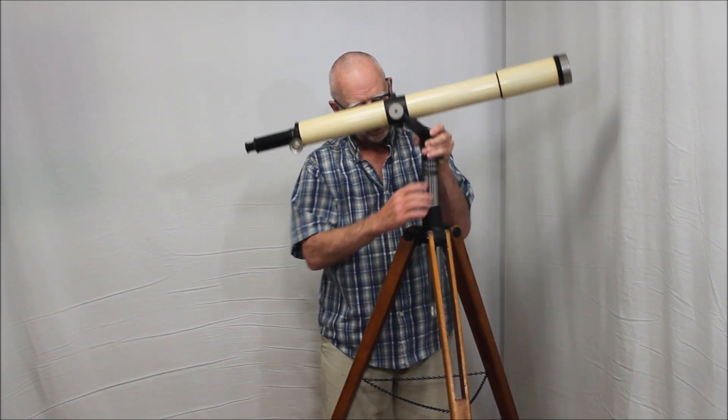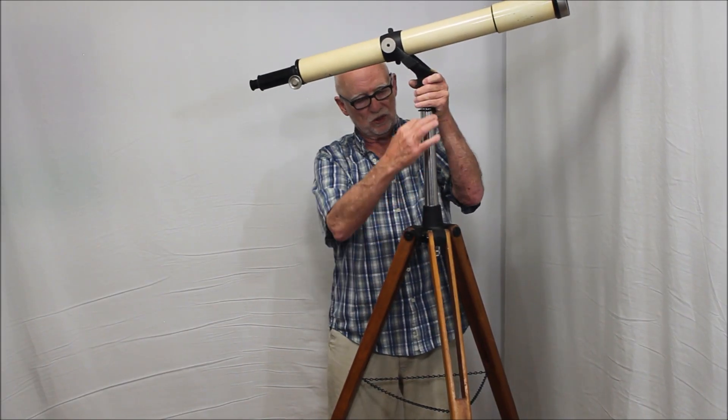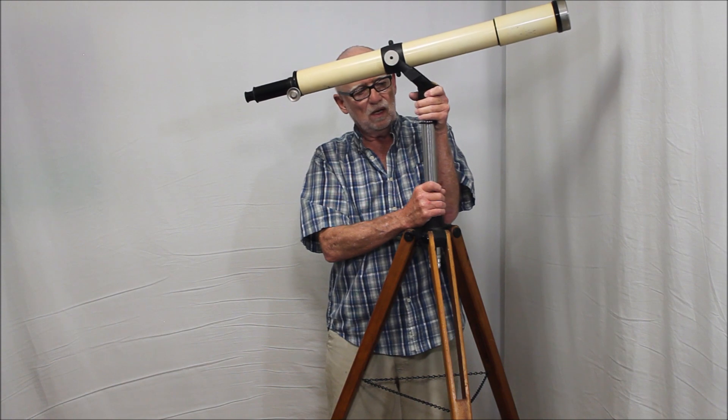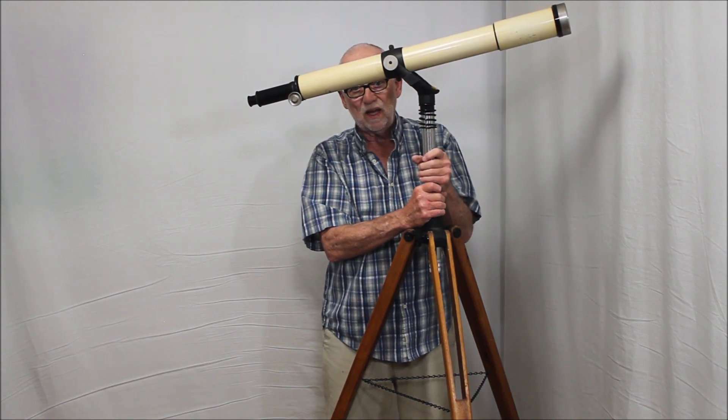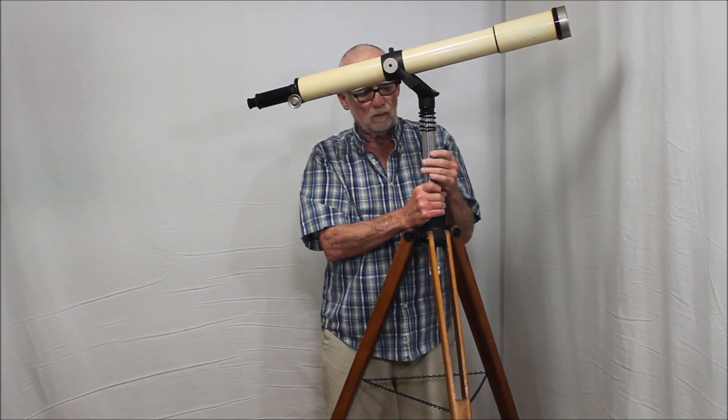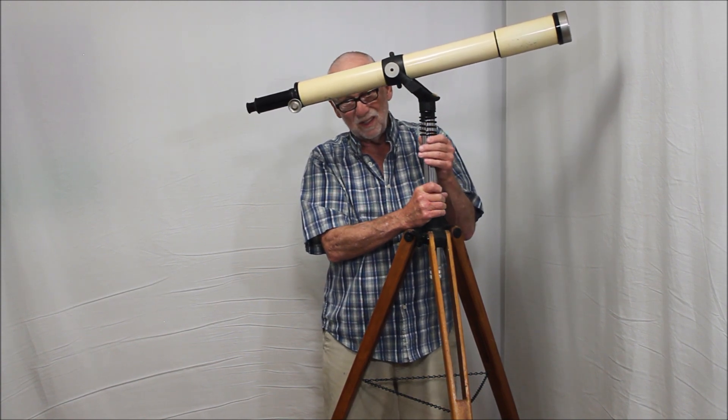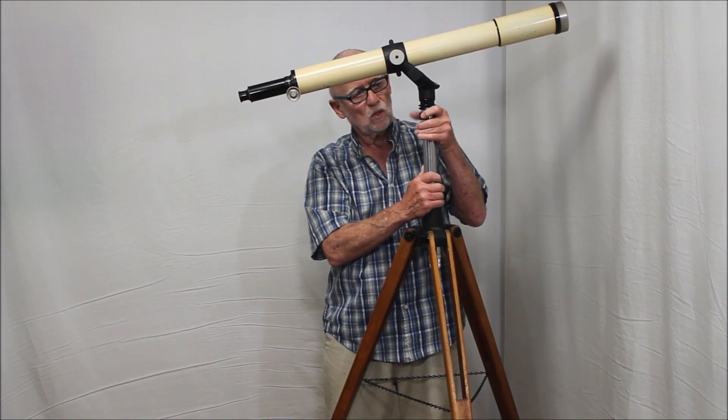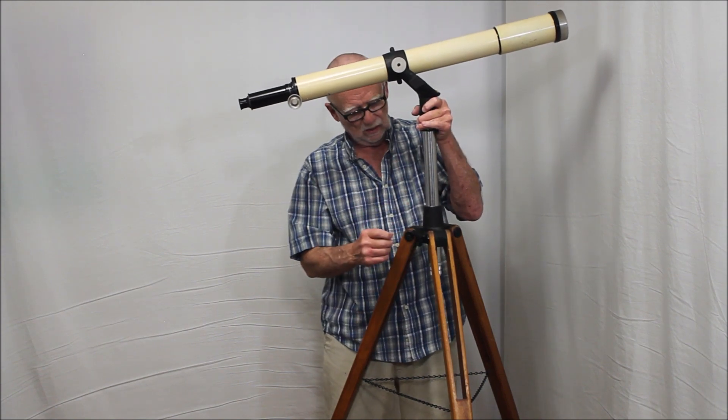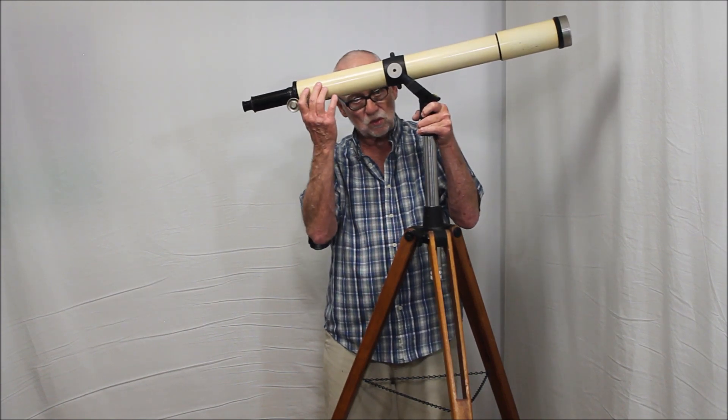By the way, this whole shaft here is actually a reproduction. The shaft, when I got the scope, it didn't have that. And normally these are made of, I believe, brass, nickel-plated brass. Well, I didn't have anything like that, so I made this out of steel, but it serves the same function and looks almost identical.